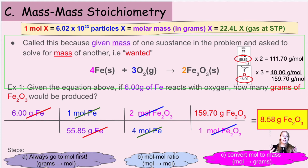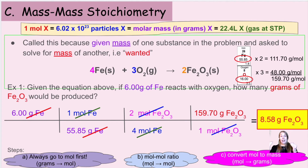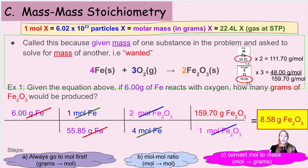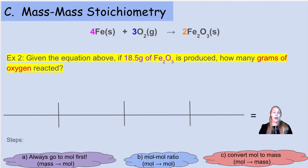This is very practical for a lab situation: if we have six grams of iron and run this reaction, we can figure out how many grams of Fe₂O₃ should be produced — 8.58 grams. So if we're trying to make a specific quantity of Fe₂O₃, we can use stoichiometry to determine how much iron to start with.